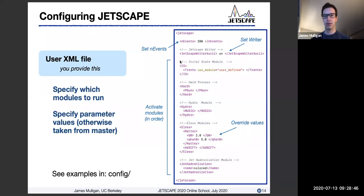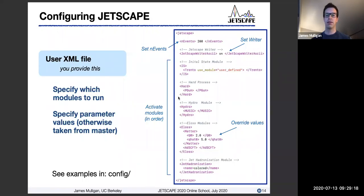In this example, we have first an initial state module, then a hard process, then hydro, then an energy loss module — which itself contains two different sub-modules, MATTER and ADS-CFT in this example — and finally a hadronization module at the bottom. Any module that appears in your user XML file will be executed when you run Jetscape, and any parameters you specify there will also be used.